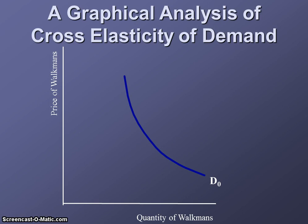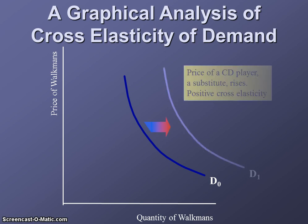Looking at this graphically: if we're looking at the demand for Walkmans — a slightly old-school example — Walkman demand will be affected when the price of a CD player increases. A CD player is a substitute for a Walkman. Therefore, demand for Walkmans will increase when the price of the substitute goes up, so demand for Walkmans will shift to the right, which means there's positive cross elasticity.